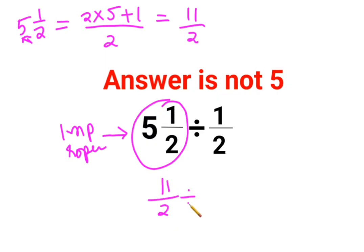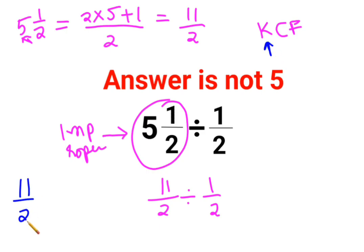Whenever you have fraction division, you need to follow the rule of KCF: K stands for keeping the first number as it is, C stands for changing the division sign to multiplication, and F stands for flipping — or taking the reciprocal of 1/2, which gives you 2.